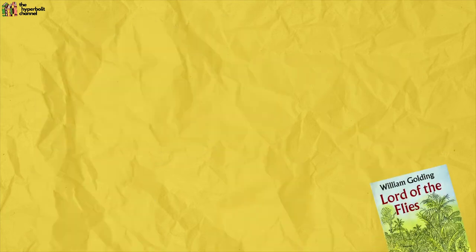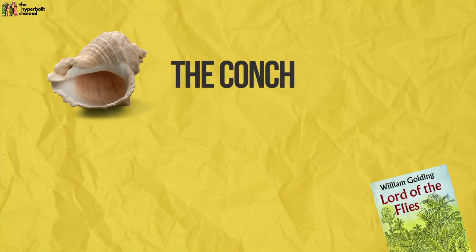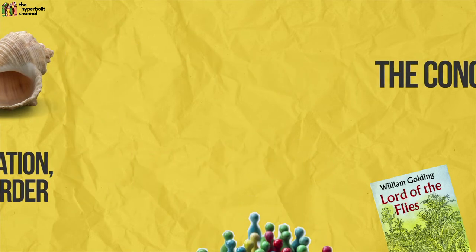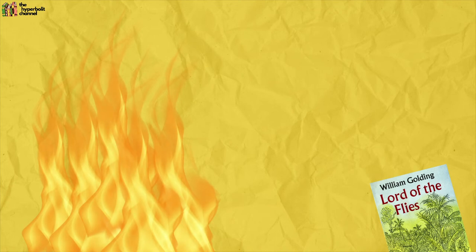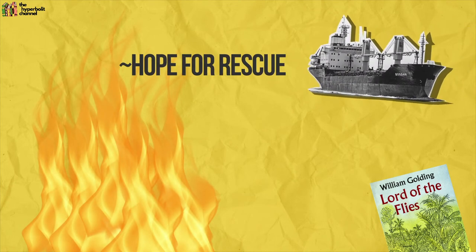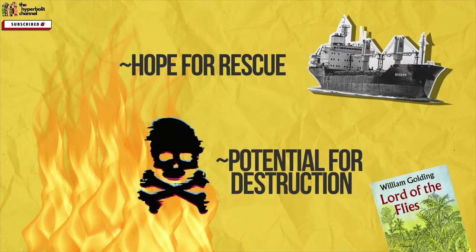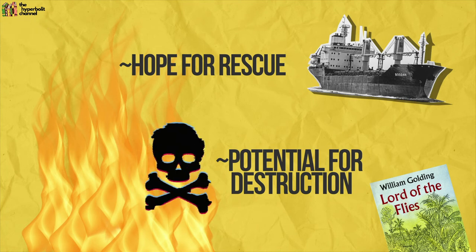Golding's Lord of the Flies is also a text chock full of symbols. There's the conch that Ralph blows to summon the boys for an assembly, and symbolically this conch represents civilised order. The fire is another symbol with different layers of meaning: on the one hand it represents the hope for rescue, because it's only by keeping the fire alive that far-away ships would be able to see signs of life on the island. But equally it represents the potential for destruction, as the fire ultimately runs amok to kill some of the boys and burn up the entire island.